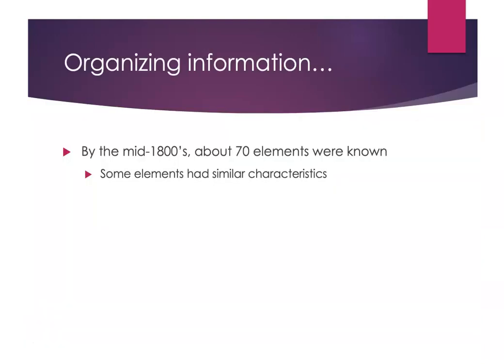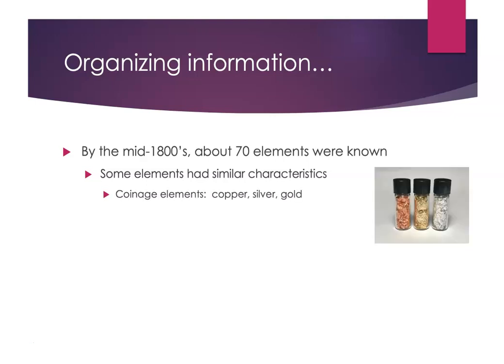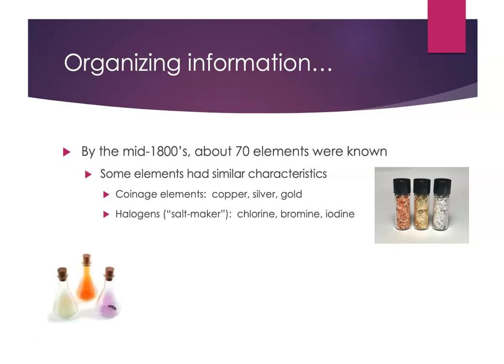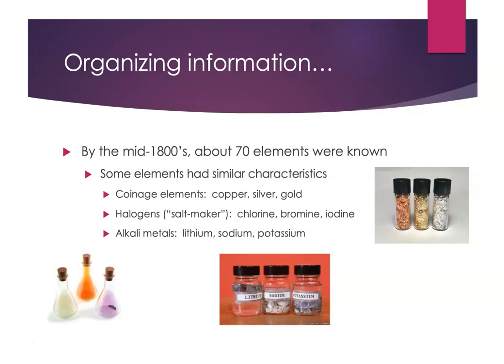By the mid-1800s it was known that there were about 70 elements that had been identified as elemental matter, and some of these elements clearly had similar properties. For example, the coinage metals — copper, silver, and gold — are not very reactive and behave very similarly. The halogens, the salt makers — chlorine, bromine, and iodine — had similar properties in terms of the types of compounds they formed, their ratios, and their physical properties. Similarly, the alkali metals were very clearly a group of elements with very similar properties, and so this led to a push to try and organize all of this information.